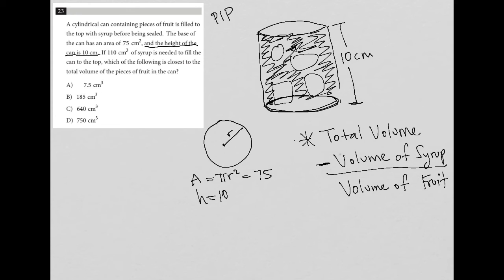How do we find the total volume? The volume formula is V = πr²h. We already know that πr², which is the same as area, equals 75. We also know the height is 10. So the total volume for this can is 750 cubic centimeters.